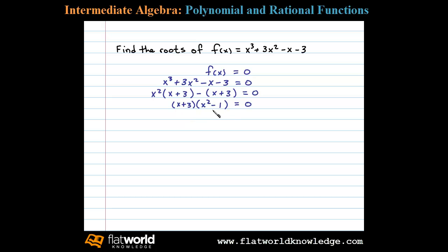We're not quite done factoring because x² - 1 is a difference of squares, so we can factor that further. We have (x + 3)(x + 1)(x - 1) = 0.